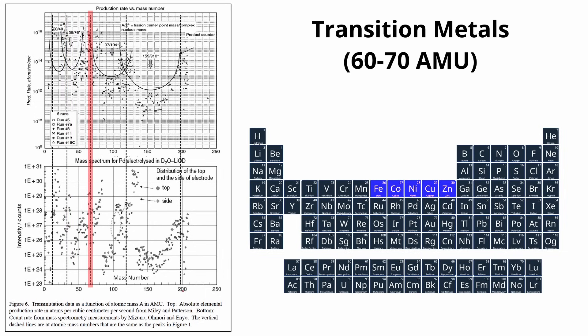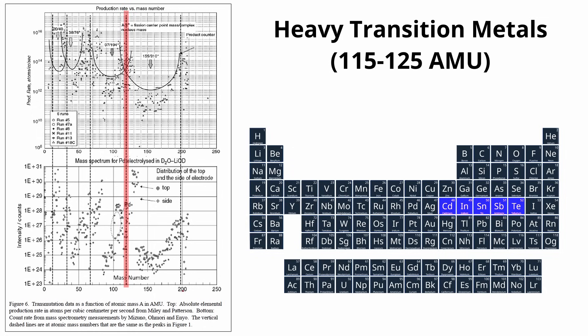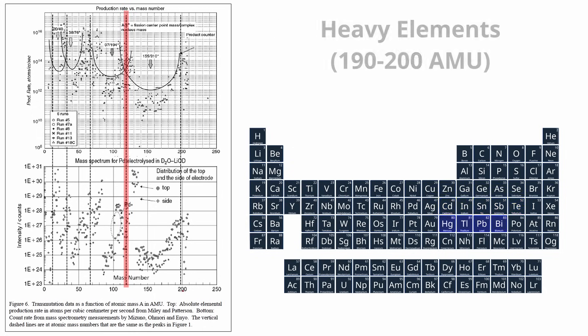The third peak, transition metals, typically includes zinc and other transition metals like iron and nickel. The fourth peak, heavy transition metals, encompasses tin and other nearby elements. And lastly, the fifth peak, heavy elements, includes mercury and other heavy elements.